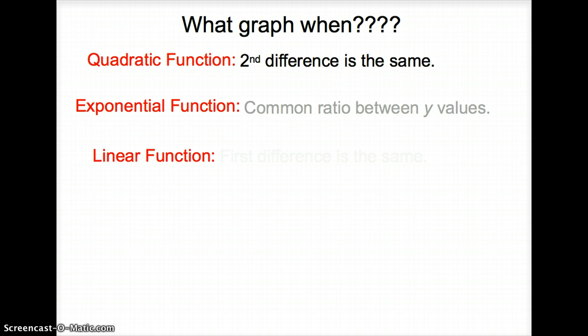An exponential function, there is a common ratio between y values. Remember, common ratio, you could multiply, multiply going forward, or you could divide. Common ratio means multiplication or division. And then a linear function, where the first difference is the same. So quadratic function, the second difference is the same. Exponential function, you have to multiply or divide to get each of your y terms. And then your linear function, your first difference will always be the same. And that does it for section 10.8.